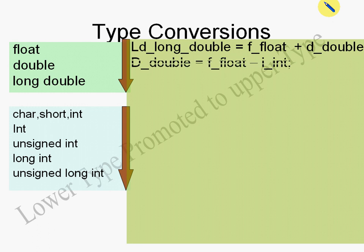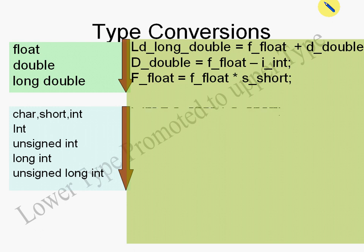Looking at the next expression: if either operand is double, convert the other to double — so float and int types get converted into double, and the result gets stored in D_double. The next rule: if either operand is float, convert the other to float — so a short gets converted to float. For integer types, if either operand is int, convert the other to int — so char and short get converted to int.